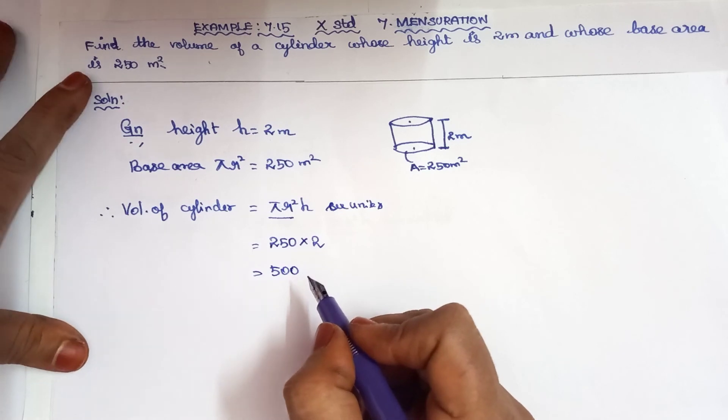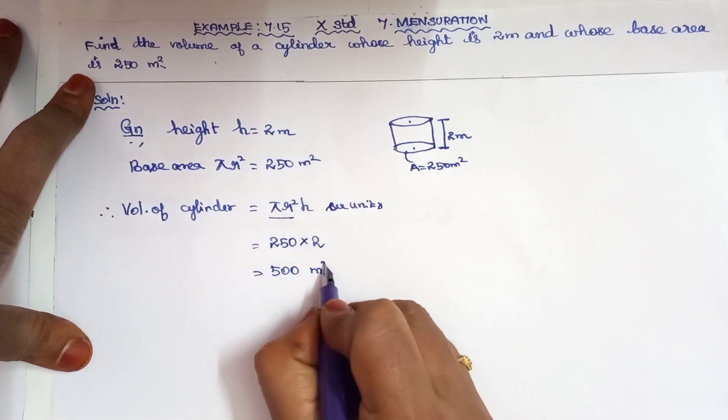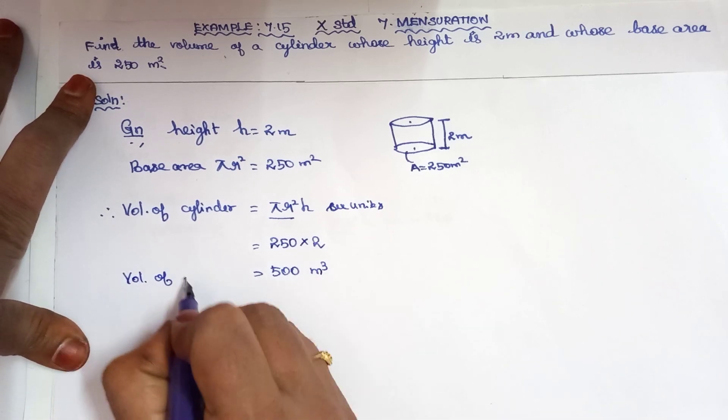This is the volume of cylinder. The units are meter cube.